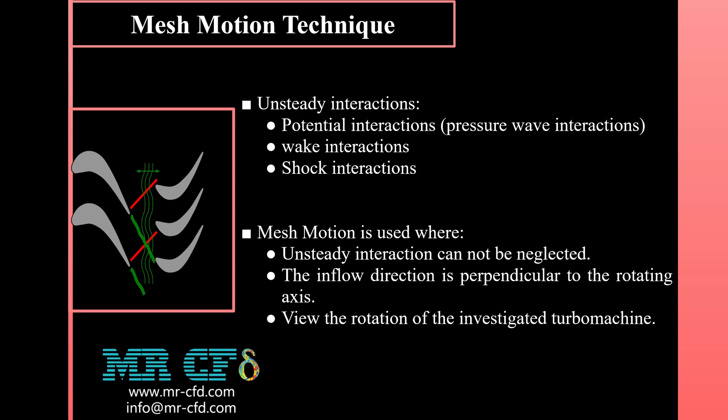Frame motion techniques — SRF and MRF — neglect unsteady interactions entirely when a steady state solver is used, and thus are limited to flows where these effects are weak. If unsteady interactions cannot be neglected, the inflow direction is perpendicular to the rotating axis, or we simply want to view the rotation of the investigated turbomachines, we can employ the sliding mesh model to account for the relative motions of the stationary and rotating components.